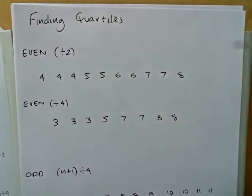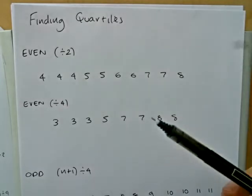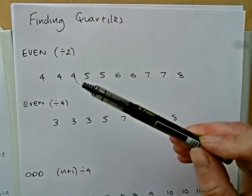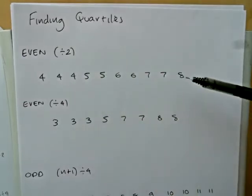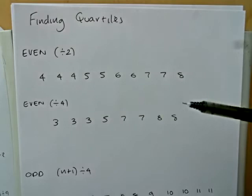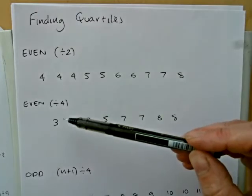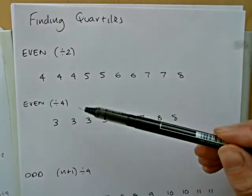In this video I'm going to show you how to find quartiles from lists of numbers. There are four basic types of lists you can come across. You can have two types of even numbers: even numbers that divide by 2, so that could be like 10 numbers or 14 numbers, and then there's a slightly different technique for even numbers that divide by 4.